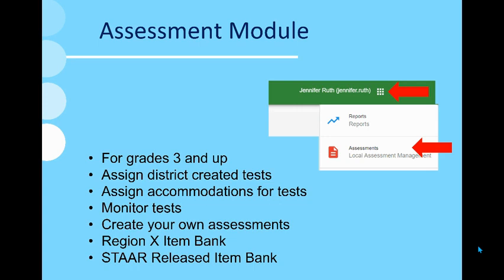This is where you will assign district-created assessments — unit tests in grades three through five in English or Spanish for reading, math, science, and social studies. For grades six and up, there are course-specific progress monitoring assessments that you will administer. In the assessment module, you will assign the test, assign accommodations, and monitor testing. You can also create your own assessments using a key only, the Region 10 item bank, or a STAR released item bank. There is a guide and a video on our EduGents page about how to use this module.